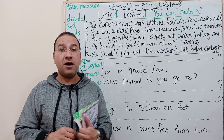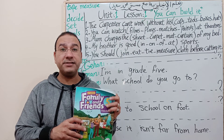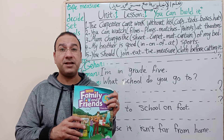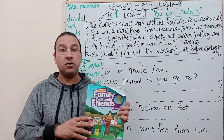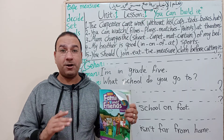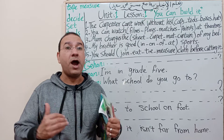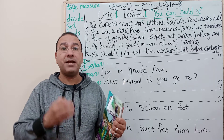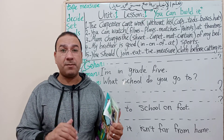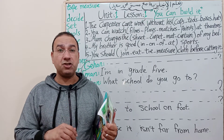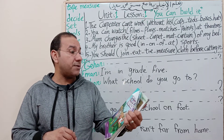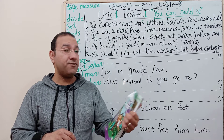This is Family and Friends, 5th level. We will begin today and cover the entire level. Family and Friends 5 - we are done with Family and Friends 4, and we are working on Family and Friends 6.